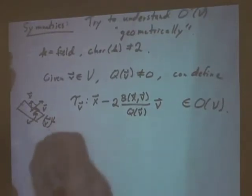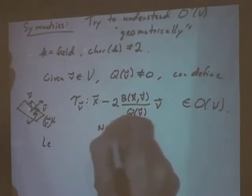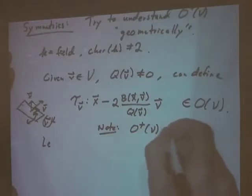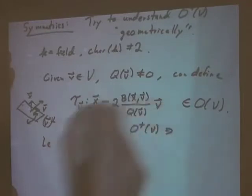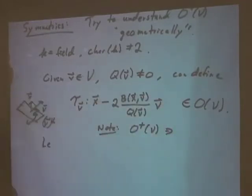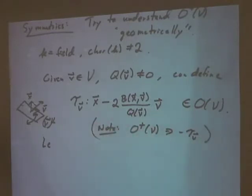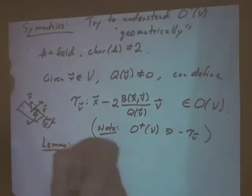A note: the determinant of tau_v is minus one, because it preserves the space and reflects one vector. So if we take minus tau_v, this is in the special orthogonal group O⁺(V). And the condition that v is non-zero is important because we divide by Q(V) in the definition.